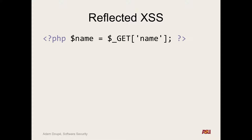Here we have PHP code that sets the name variable to a GET parameter. The global GET array accesses the query string — it returns whatever value is in the URL for the key 'name'. Who controls that? The user or attacker — it comes from the user making the request.